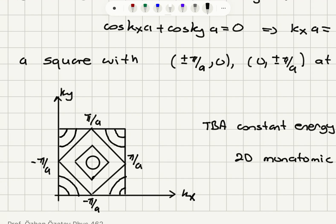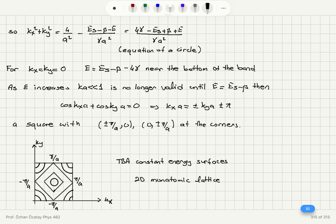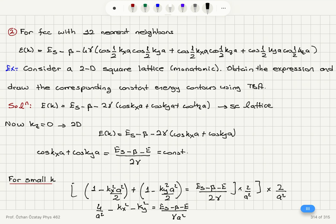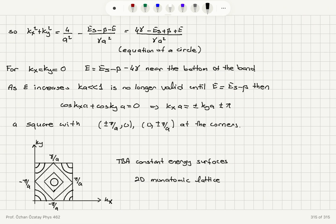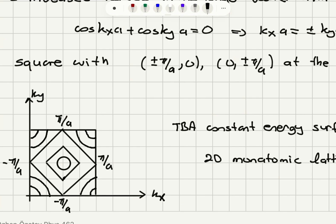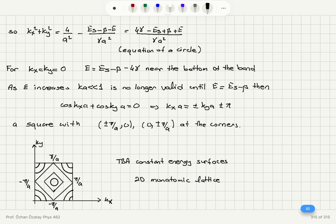In the middle we have a circle, which turns into a square at this extreme. Beyond this, we have the Bloch electron situation where constant energy surfaces cross the Brillouin zone boundary perpendicularly, giving circular arcs. So we are solving cosine(KxA) plus cosine(KyA) equal to a constant for K values in the first Brillouin zone, where Kx and Ky are each between ±π/A, yielding the constant energy surfaces shown.